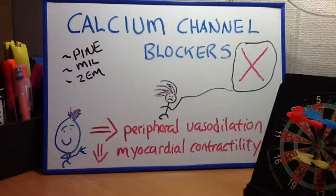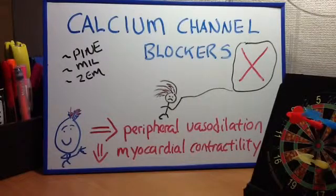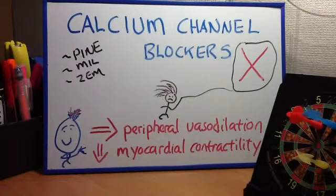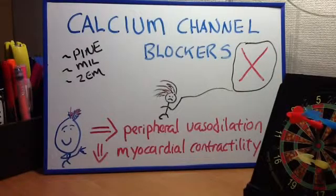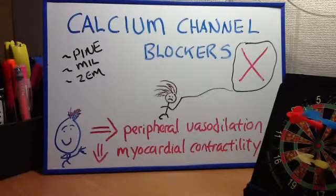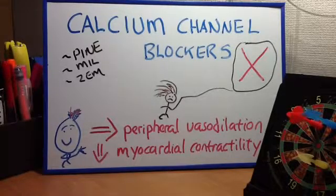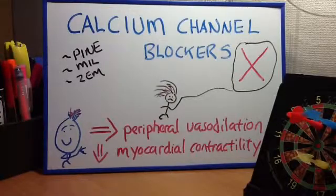Nifedipine, nicardipine, and amlodipine have a greater effect on vascular smooth muscle as opposed to cardiac tissue, while verapamil has a greater effect on cardiac tissue as opposed to vascular smooth tissue.